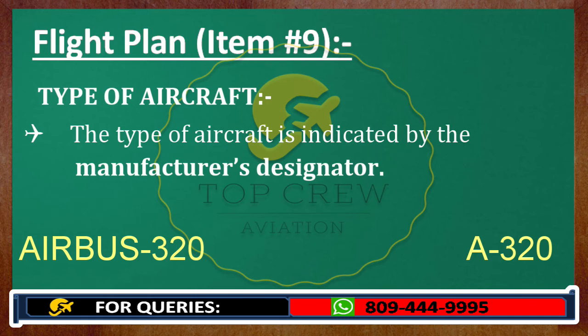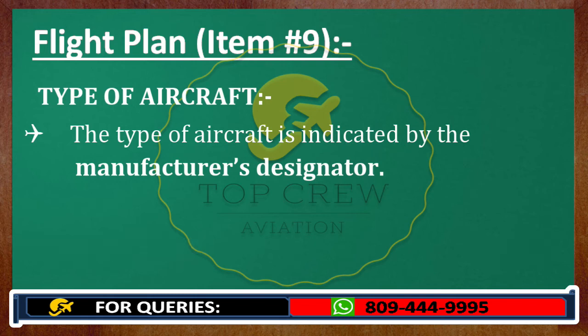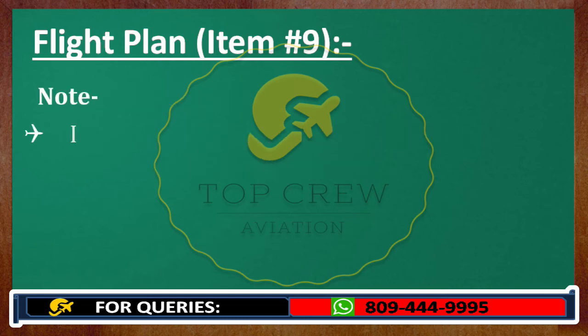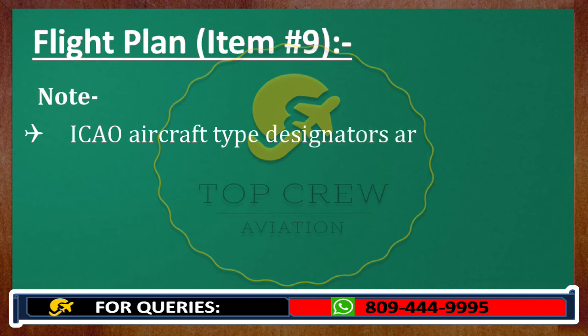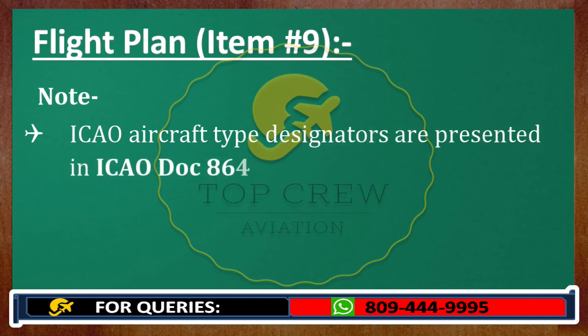Then you will mention your wake turbulence category. Note that ICAO aircraft type designators are presented in ICAO DOC 8643. You should be aware of this for your Part 2 exams.